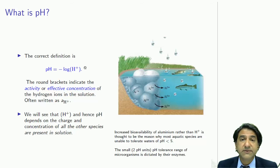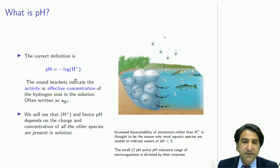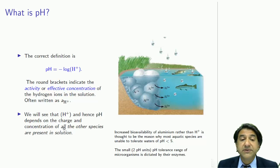Only at low concentrations do activities approach concentration. Otherwise, the activity is normally given by round brackets — (H⁺) — which indicates activity, while square brackets [H⁺] indicate concentration. It can also be written as A subscript H⁺. In either case, the activity is equal to the concentration times the activity coefficient gamma. We will see that H⁺ activity, and hence pH, depends on the charge and concentration of all the other species present in the solution. pH is not just equal to the concentration of H⁺ — it depends not only on [H⁺] but on the concentration of all other species present, especially the charged species.